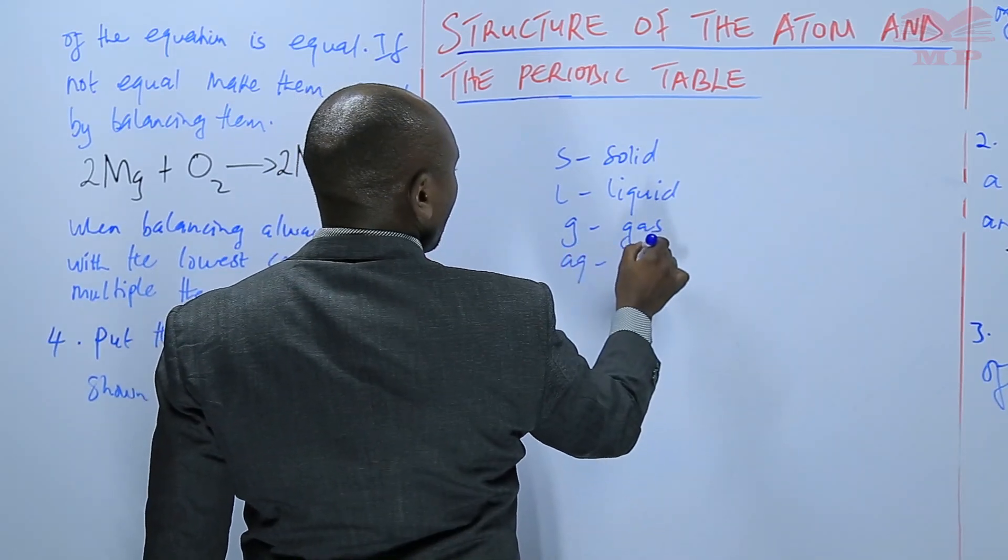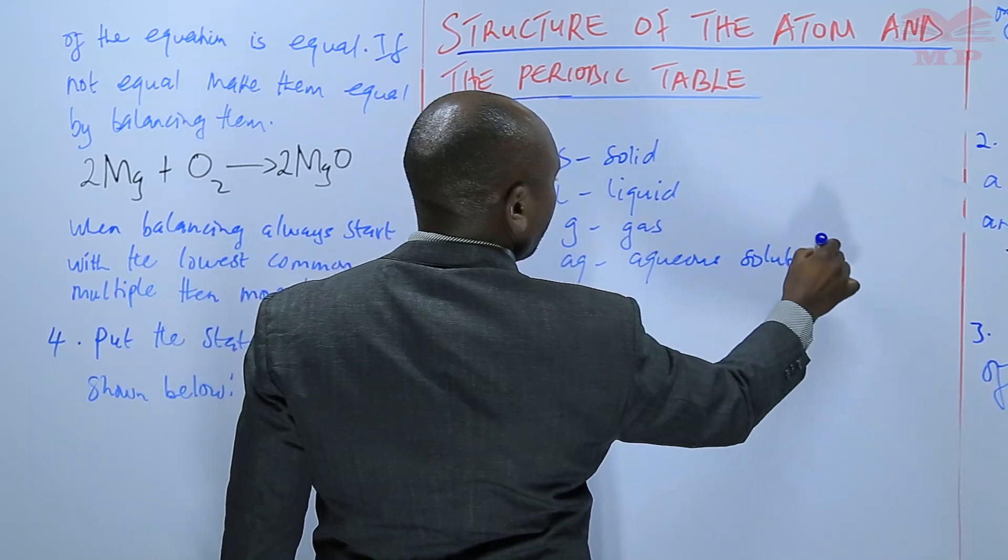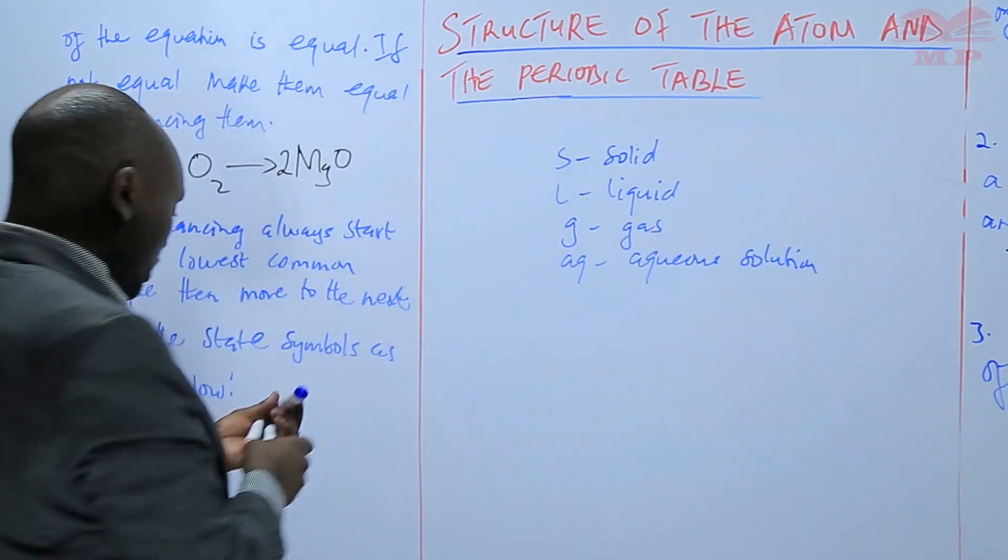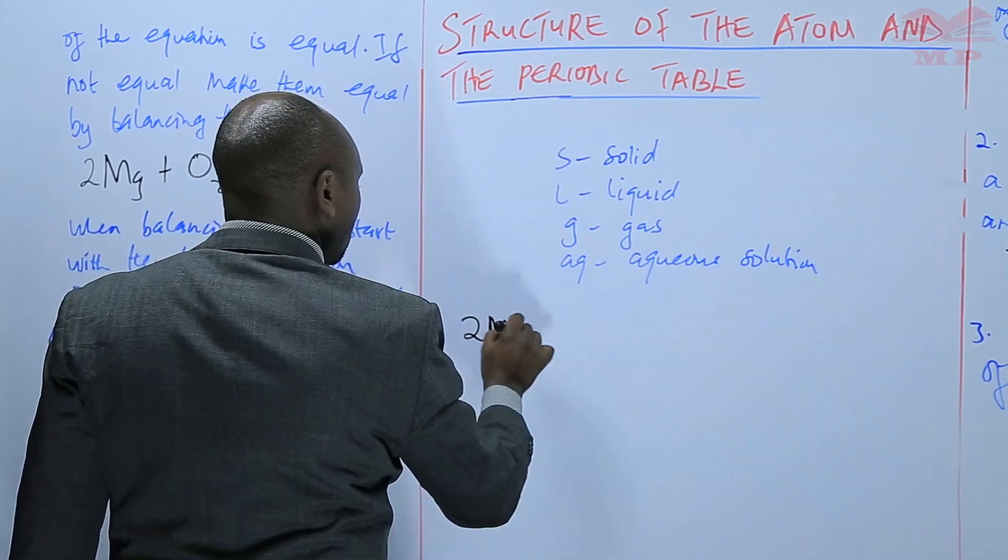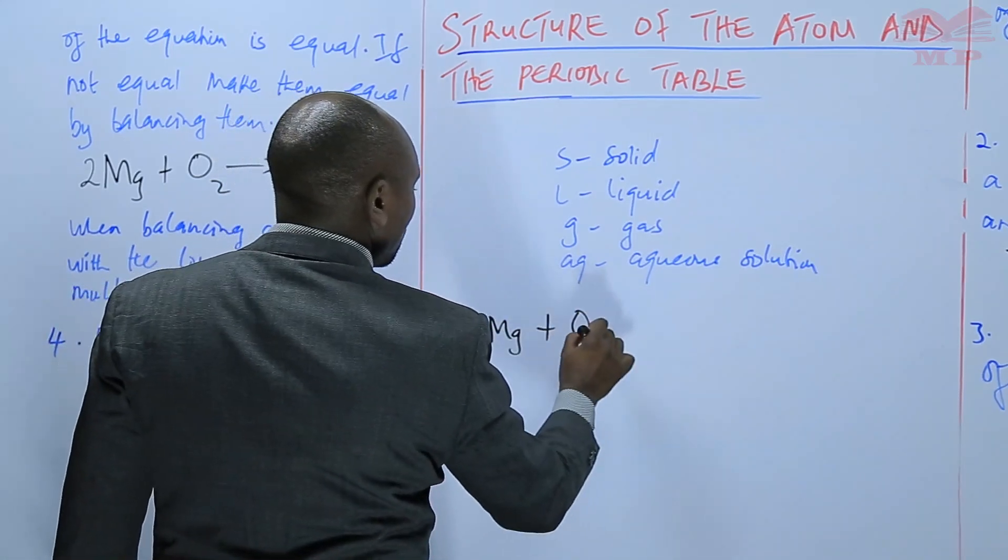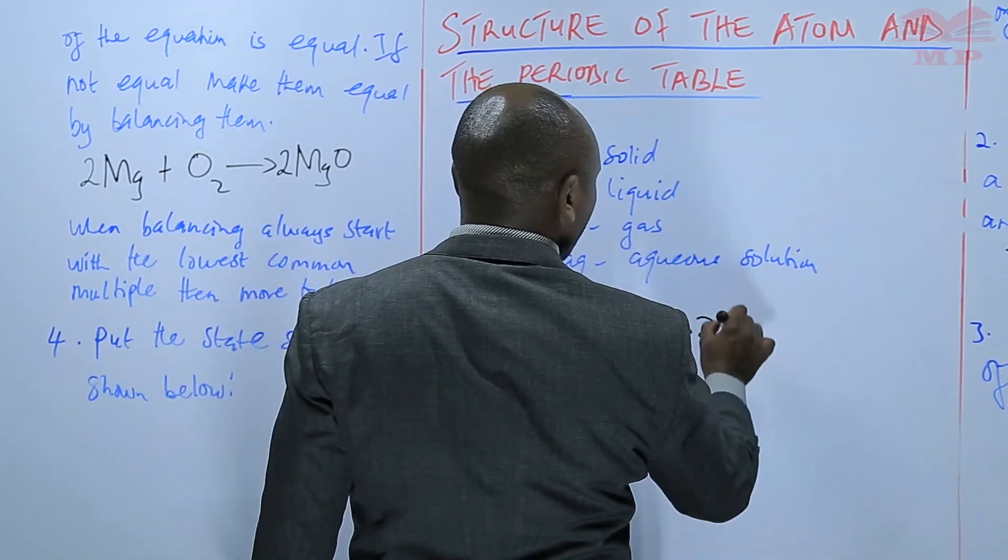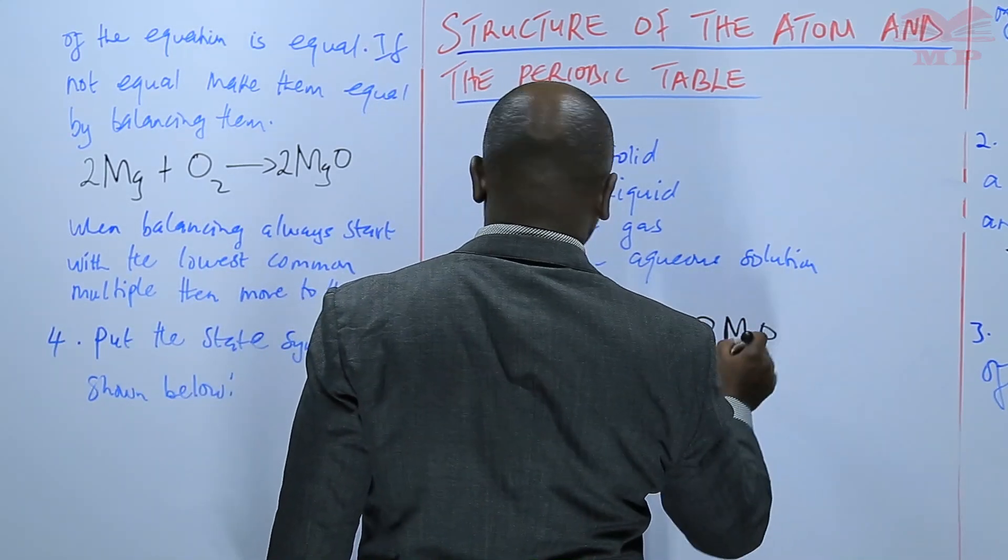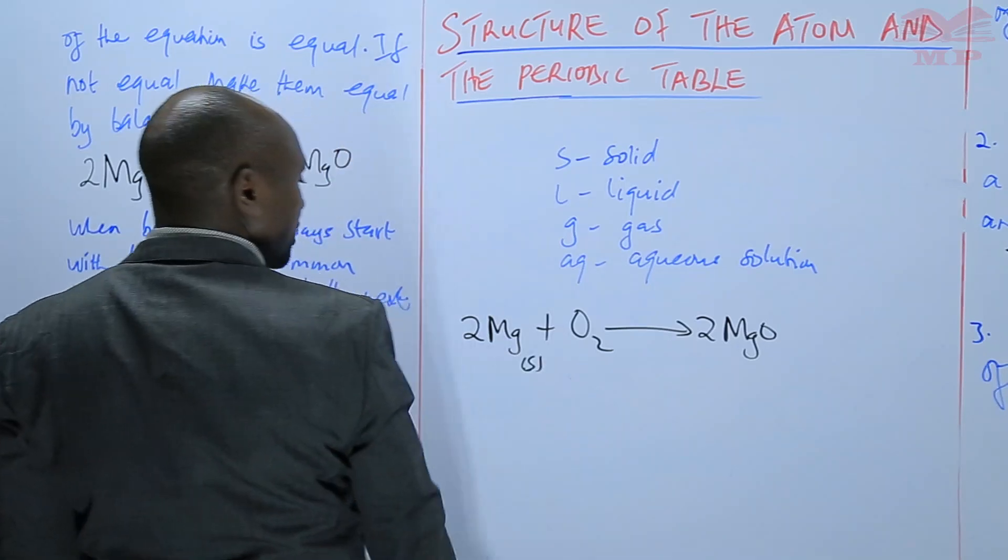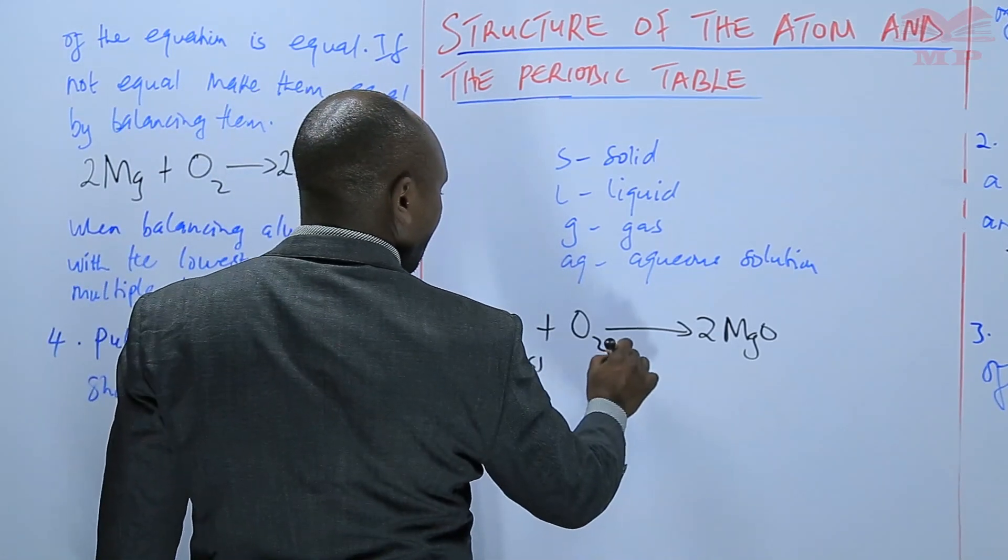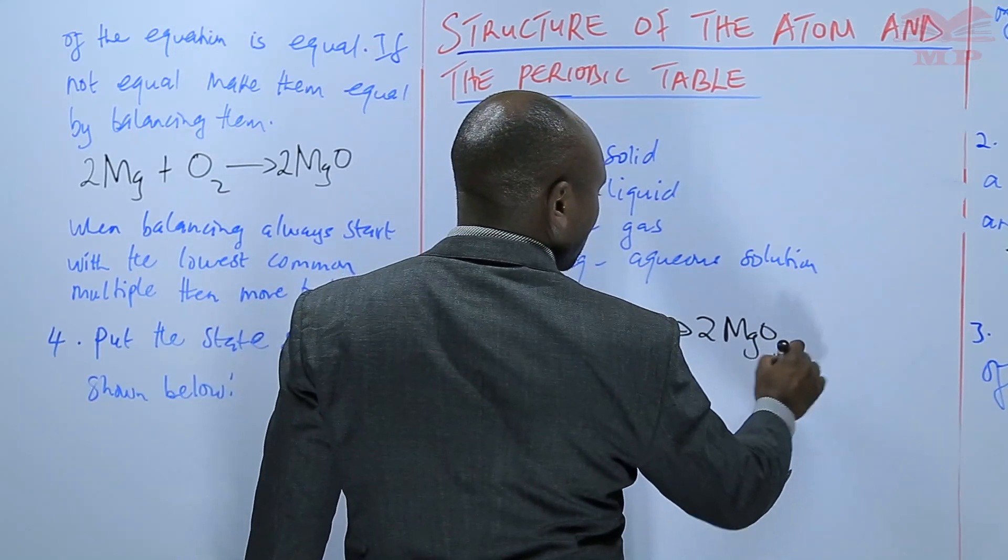So in our equation here, we have 2Mg plus O2 gives 2MgO. Magnesium is a solid because it's a metal, so we put an S. Oxygen is a gas, so we put a G. Magnesium oxide is a solid, so we put an S.